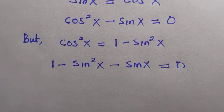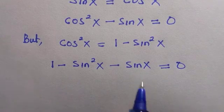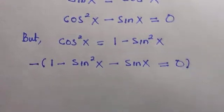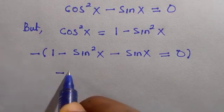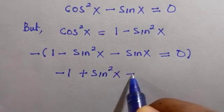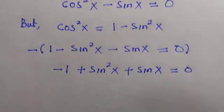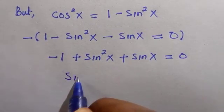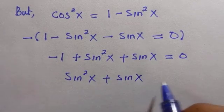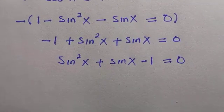To make sin squared X start the equation, we multiply negative throughout both sides. This gives us sin squared X plus sin X minus 1 equals 0, after rearrangement.